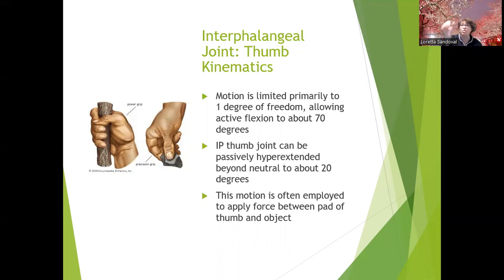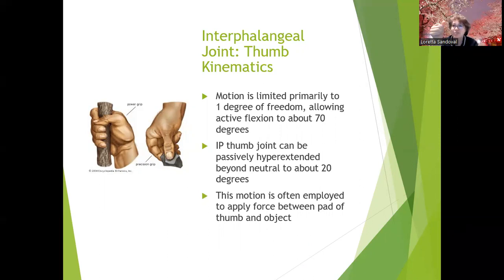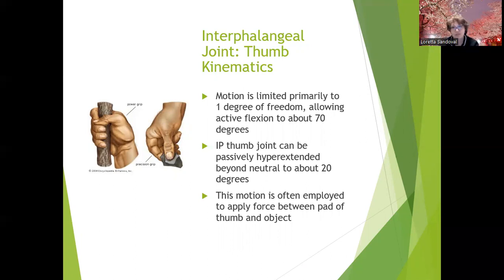One of the precision grips special to the thumb is the pad-of-thumb to side-of-finger grip — like holding onto a key and turning it. If you have a large medieval key requiring significant force, the passive hyperextension of the thumb comes in handy. Similarly, as the picture suggests, if you're scraping a hide with a stone knife, that hyperextension of the thumb is useful for applying force. So the thumb is definitely the weirdo of the group.